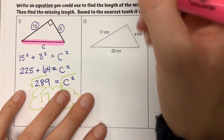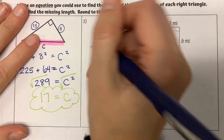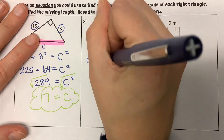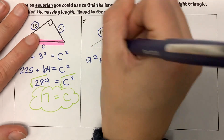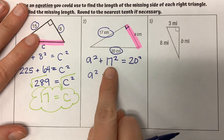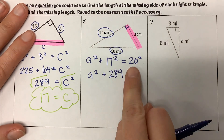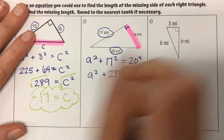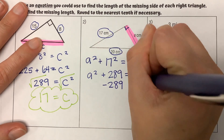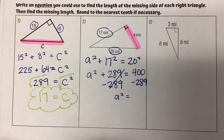Number two. I'm going to highlight my missing side here. It is connected at the 90-degree angle — it's an A value. So I'm plugging that in. We don't know A, so A squared plus the other leg connected at the 90-degree angle, which is 17, so plus 17 squared is equal to our hypotenuse of 20 squared. So A squared plus 289 is equal to 20 squared, which is 400. It's a basic one-step equation — we want to get rid of this constant of 289, so I'm going to subtract that from both sides. I get that A squared is equal to 111.